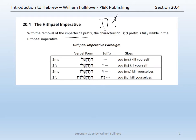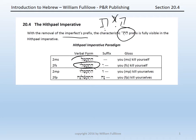With the removal of the yod, the he re-emerges. So Hitpa'el imperatives have the characteristic hit prefix fully visible. The form, then, of the imperative is hitka'el, hitka'atali, hitka'atalu, hitka'atelna.